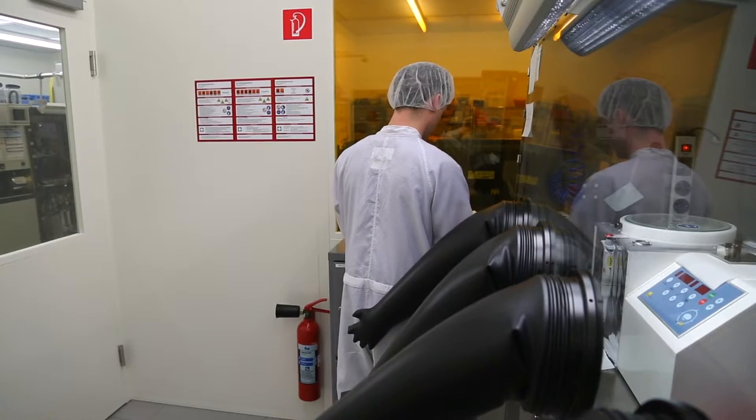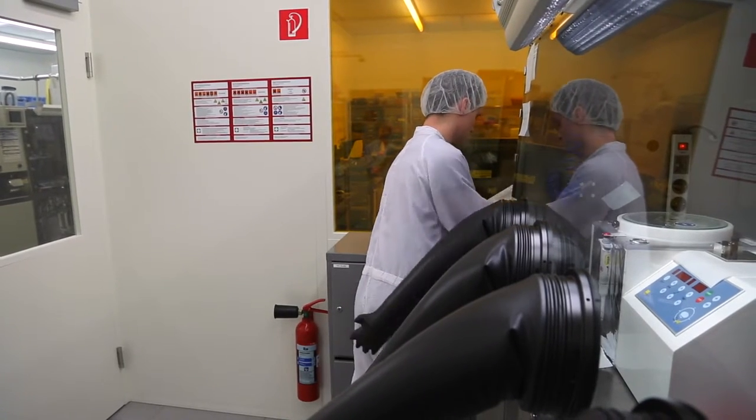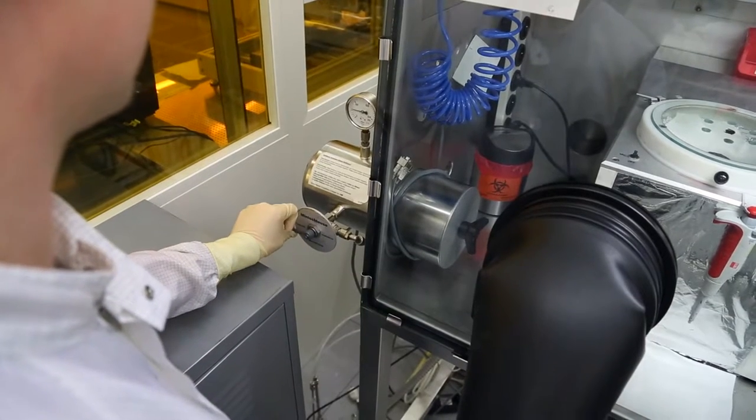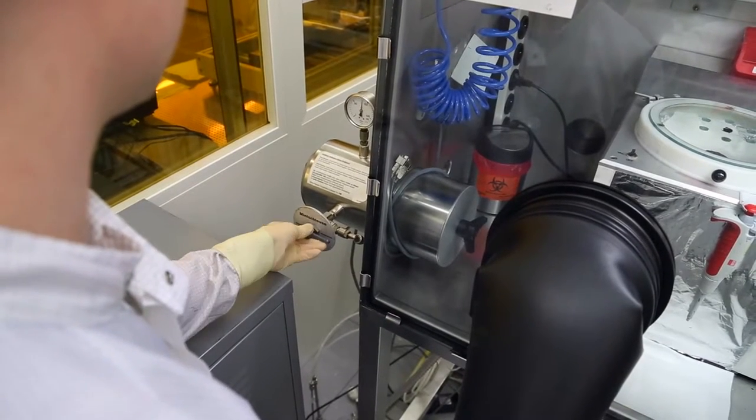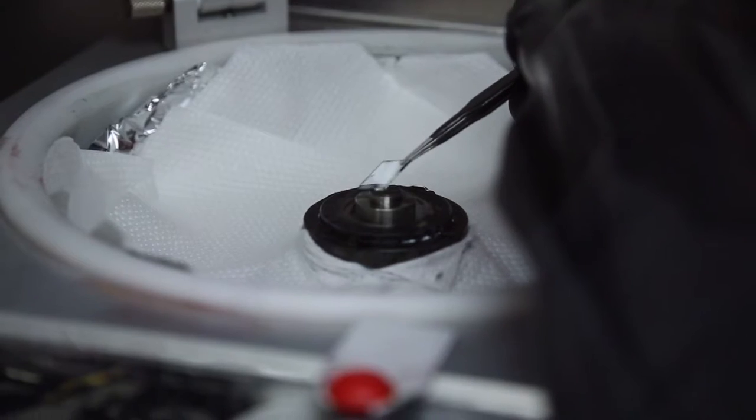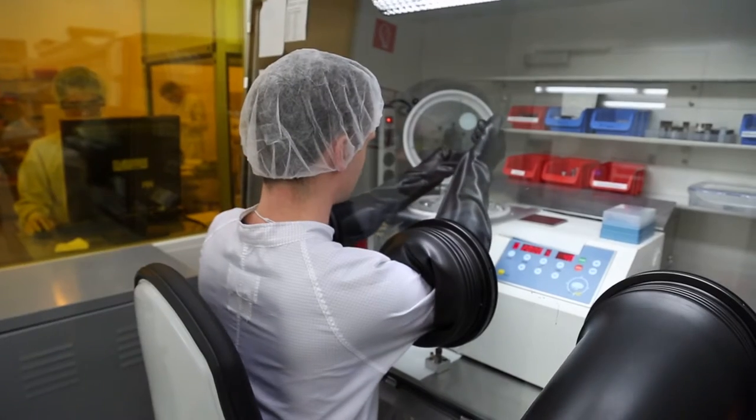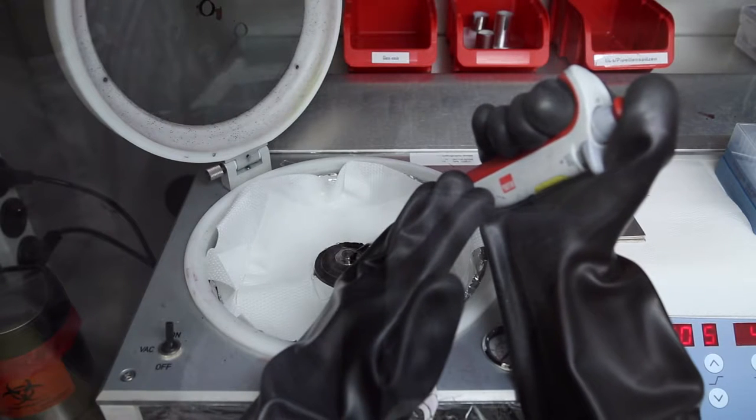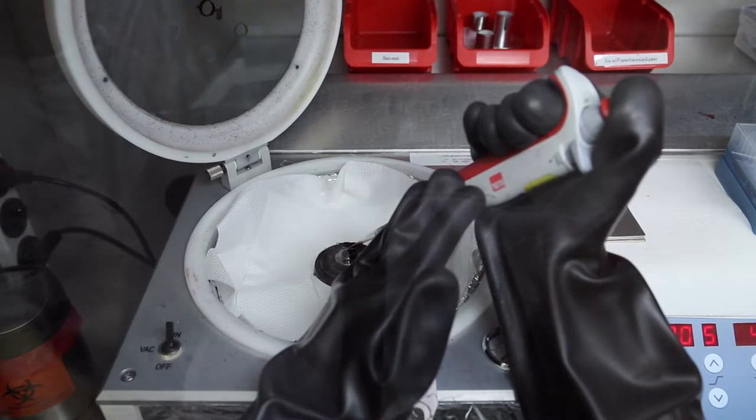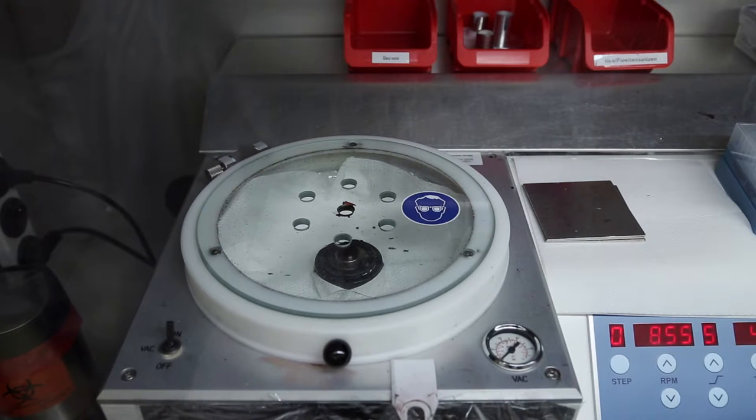The next step is the coating process, which is performed in another glove box. Once again, the vial and the glass plates must pass through an airlock and are then processed further in the nitrogen atmosphere. Daniel Baru dispenses the organic semiconductor onto the glass plate by means of spin coating. By rotating the plate at high speed, excess fluid is flung off the substrate. What remains is a thin plastic film.